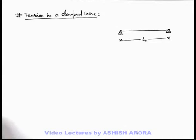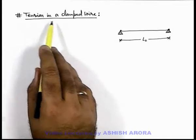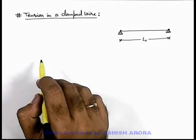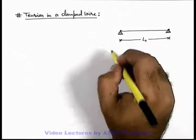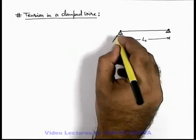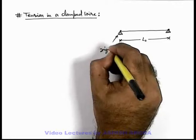Now, in this section we'll discuss about tension developed in a clamped wire. Say we're having a metal wire which is clamped between two rigid supports. These are rigid supports.